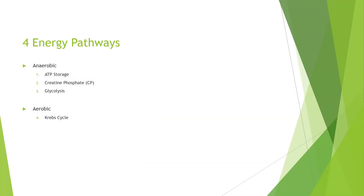There are four energy pathways that we're going to talk about: anaerobic pathways and aerobic pathways. Anaerobic pathways don't utilize oxygen, and the aerobic pathway utilizes oxygen. The four pathways are ATP storage, creatine phosphate, glycolysis, and the Krebs cycle.